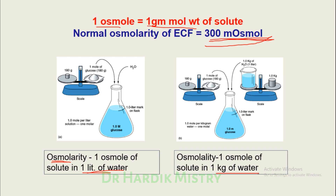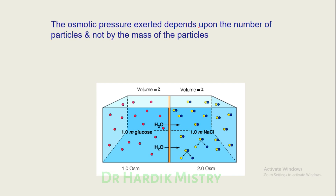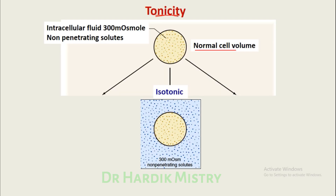In osmolarity, one osmol of solute is in one liter of water; in osmolality, one osmol of solute is in one kilogram of water. One osmol equals one gram mole weight of a solute. Osmotic pressure depends on the number of particles, not the mass of the particles. Regarding tonicity and normal cell volume: when the intracellular fluid is 300 milliosmol and the extracellular fluid is also 300 milliosmol, there is no movement of solute — this is isotonic.